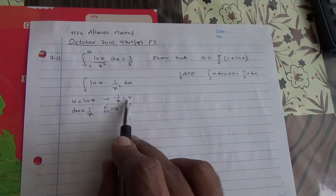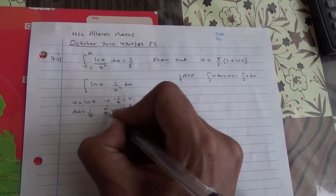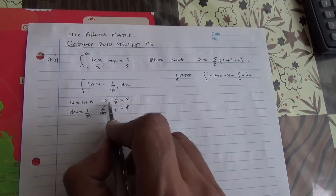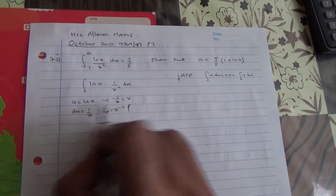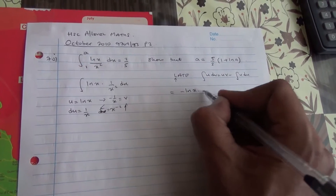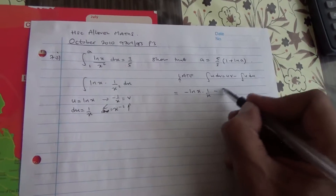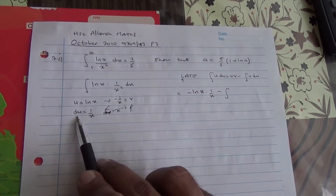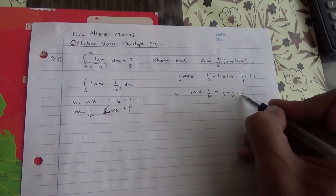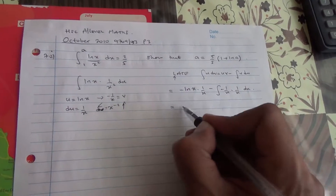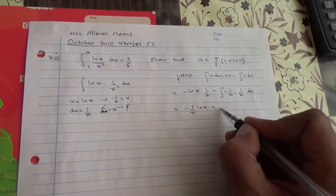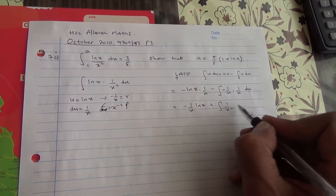Applying uv minus the integral of v du: uv gives us ln(x) times minus 1 over x, which becomes minus ln(x) times 1 over x, minus the integral of v du. v is minus 1 over x, and du is 1 over x dx, so minus 1 over x times 1 over x dx. The minus minus becomes plus, giving us the integral of 1 over x squared dx.